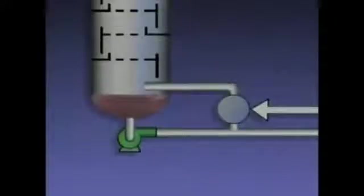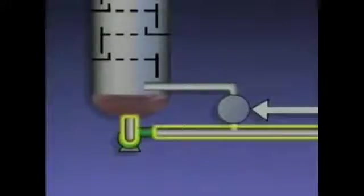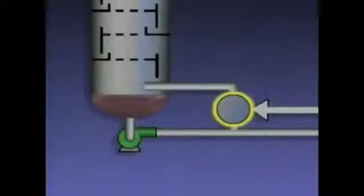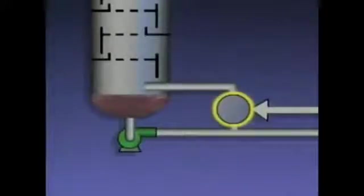Some of this liquid is drawn off as the bottoms product, and some of it is routed to a device called a reboiler, which is connected to the bottom of the tower. The reboiler is usually a heat exchanger that's designed to vaporize the lighter components that remain in the liquid from the bottom of the tower.